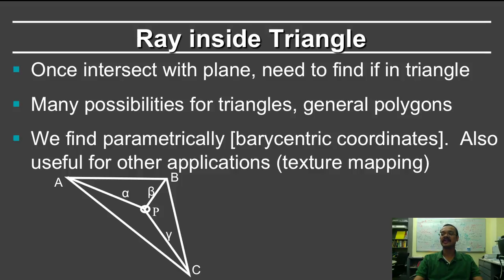The barycentric coordinates are like this, where a point p is given by weights α·a, β·b and γ·c, where the α, β and γ are all non-negative weights and they sum to one. So it's an affine combination of the coordinates a, b and c. These are known as barycentric coordinates of the point p.